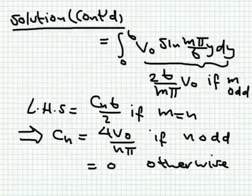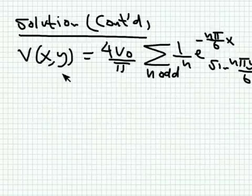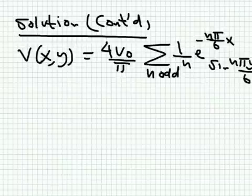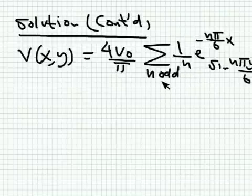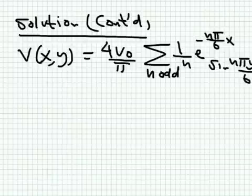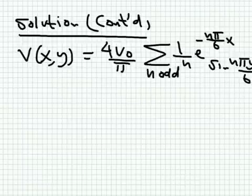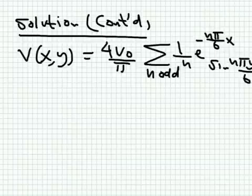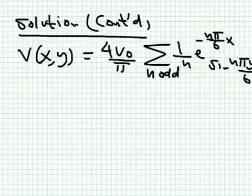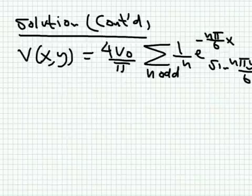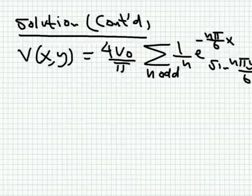Putting everything together, the final solution is V = Σ (4V₀/nπ)·e^(−nπx/b)·sin(nπy/b), summing over odd n (n = 1, 3, 5, …). This satisfies all boundary conditions, satisfies Laplace's equation, and is the unique solution. This is a complete example of how we apply Laplace's equation — you have to be extremely careful to determine whether coefficients should be real or imaginary, whether the solution along x should be decaying or sinusoidal, and which solutions are eliminated by boundary conditions.